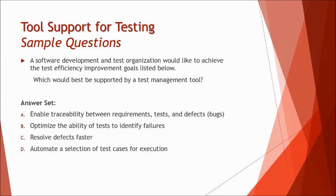The last question of the series: a software development and test organization would like to achieve efficiency improvement goals — which would be best supported by a test management tool? Option A: enable traceability between requirements, tests, and defects. Option B: optimize the availability of tests to identify failures. Option C: resolve defects faster. Option D: automate a selection of test cases for execution. Options B, C, and D are process-oriented, while A is tool-oriented, so A is the right answer.